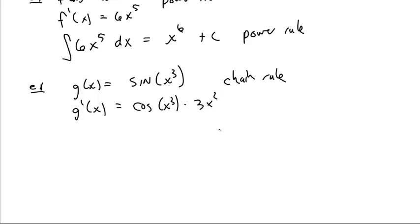And that means that the integral of cosine of x cubed times 3x squared dx is going to be the sine of x cubed plus a constant.